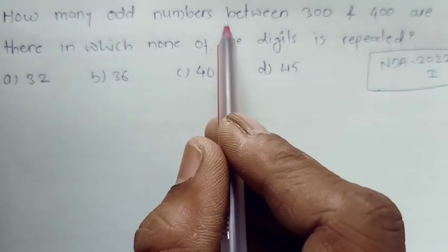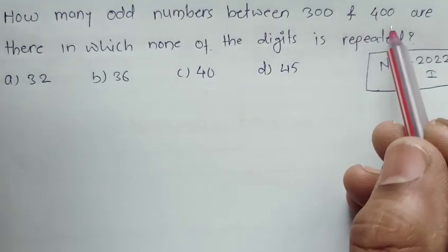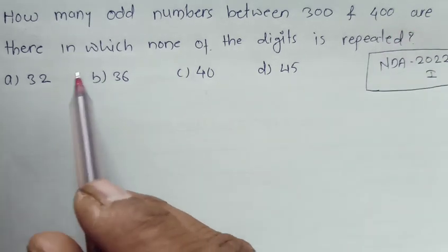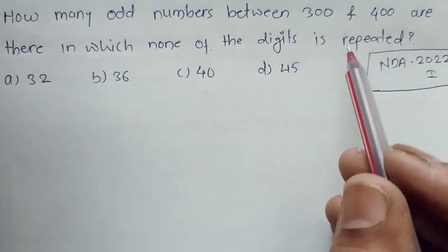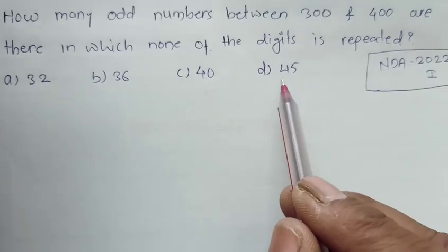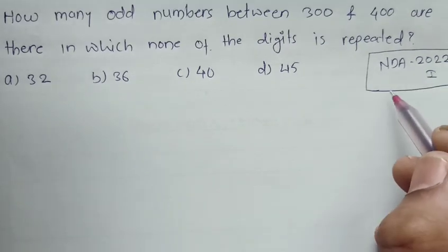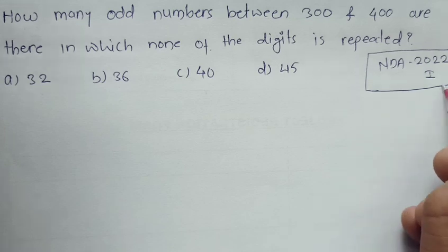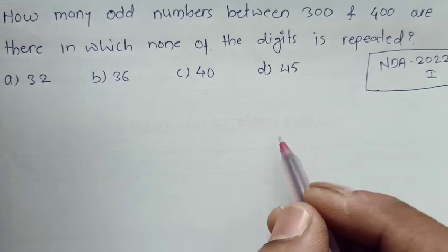How many odd numbers between 300 and 400 are there in which none of the digits is repeated? The options are 32, 36, 40, and 45. This question was asked in NDA 2022 first part. It's a very simple question.